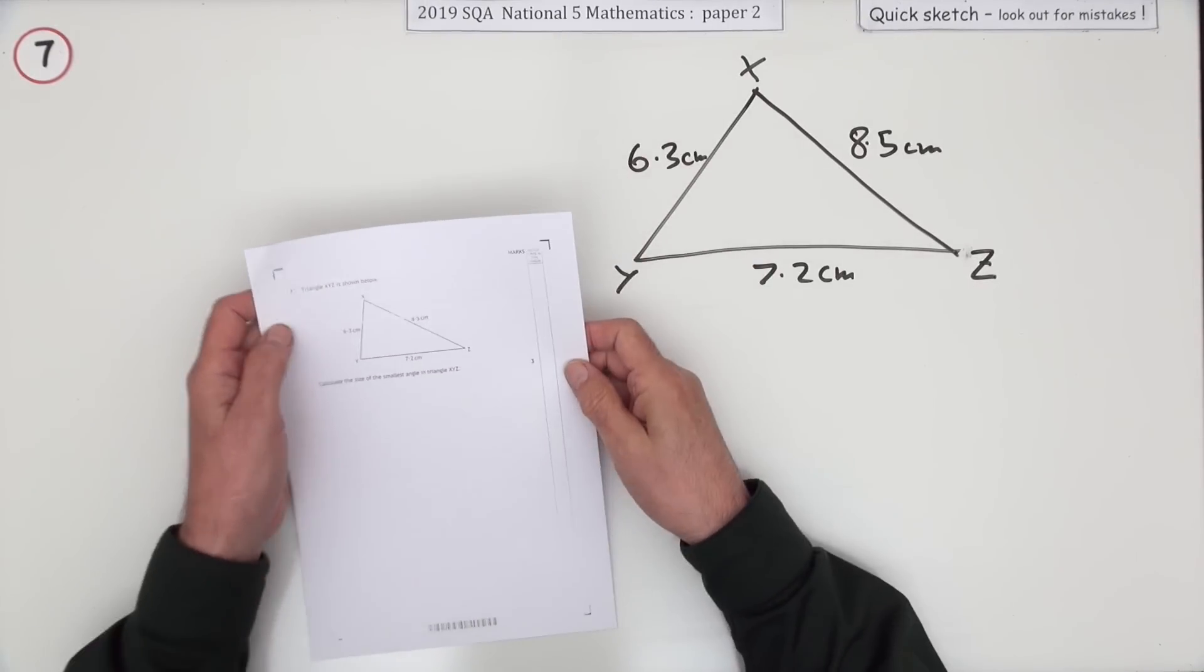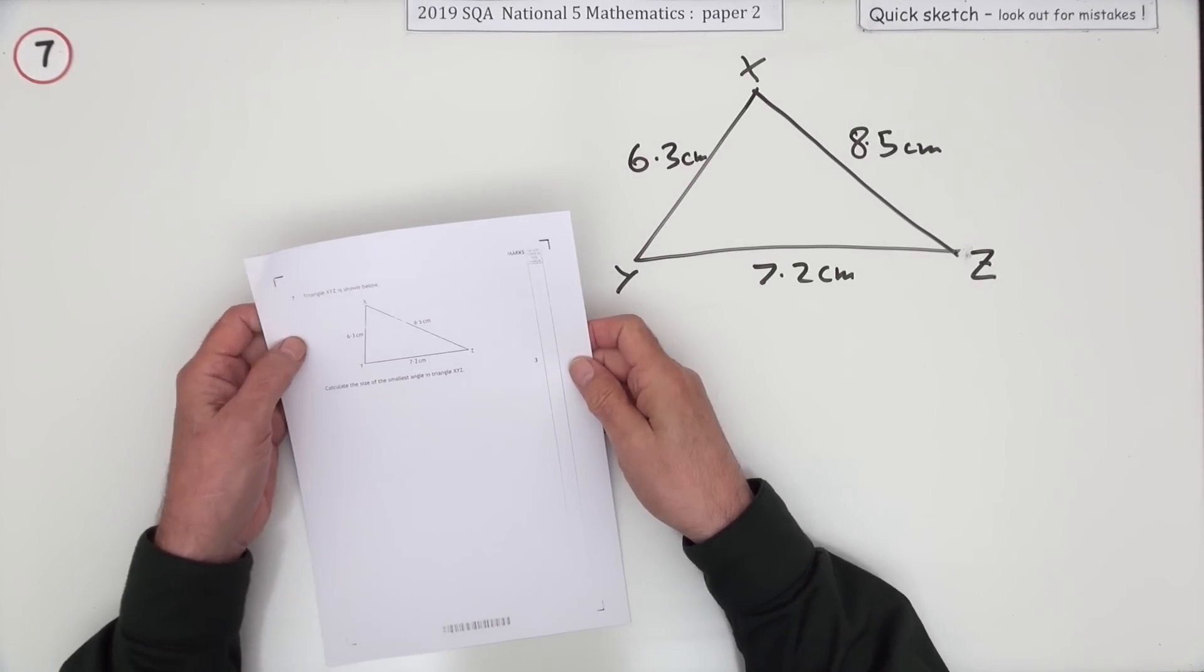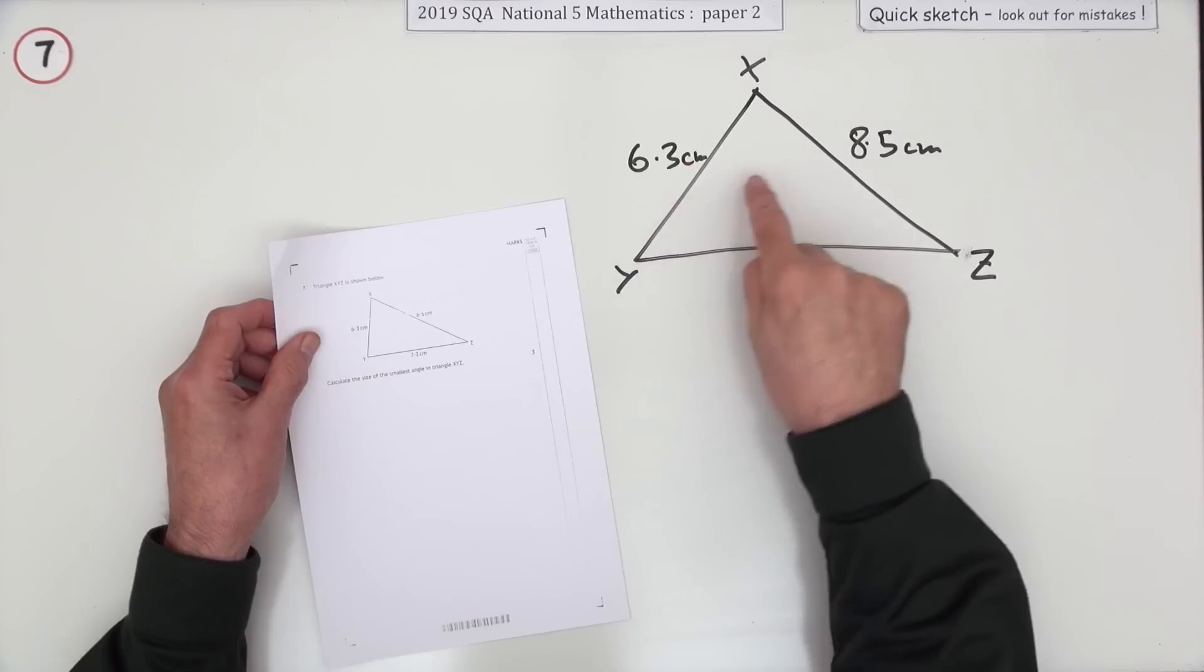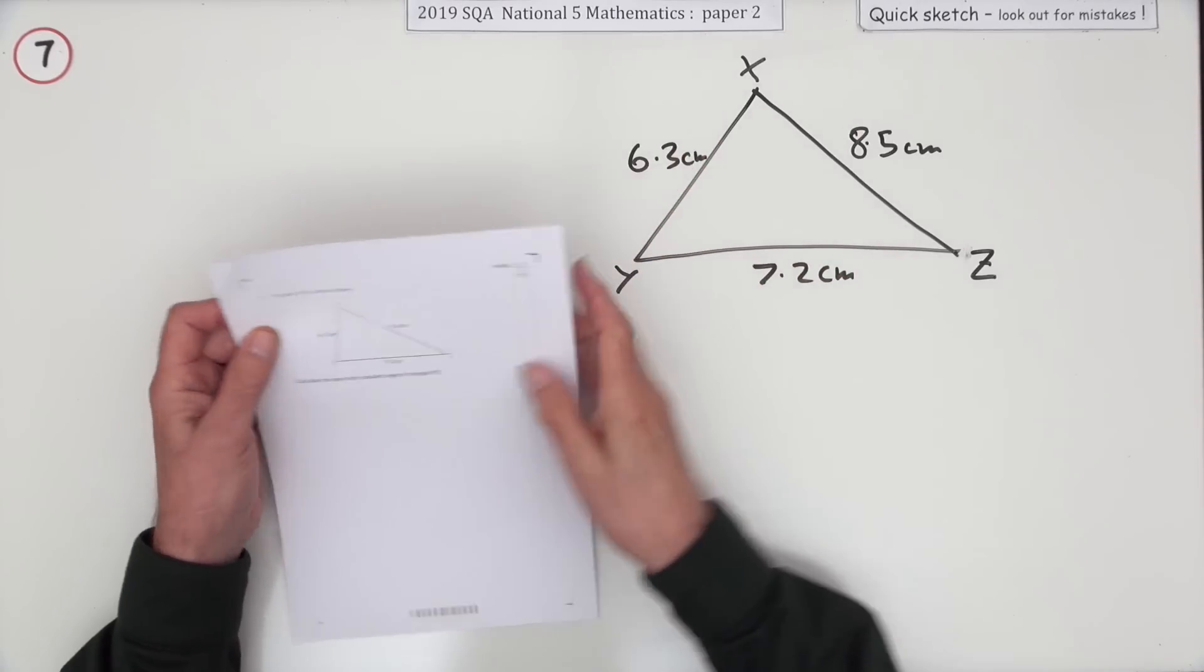Number 7 from paper 2 of the 2019 National 5. Three marks here for another non-right-angled triangle. It's a scalene triangle, one of the formulas at the front.